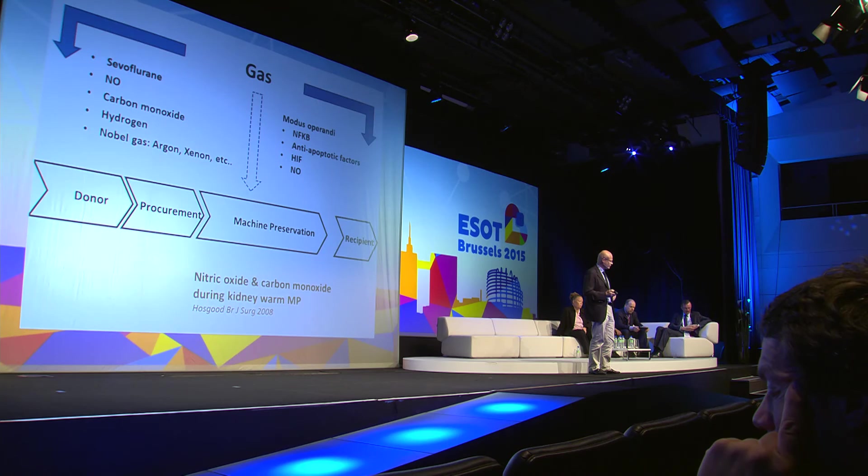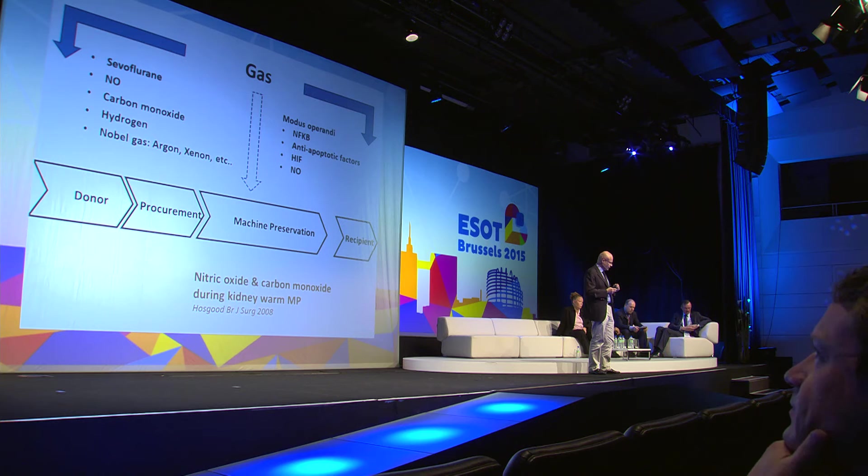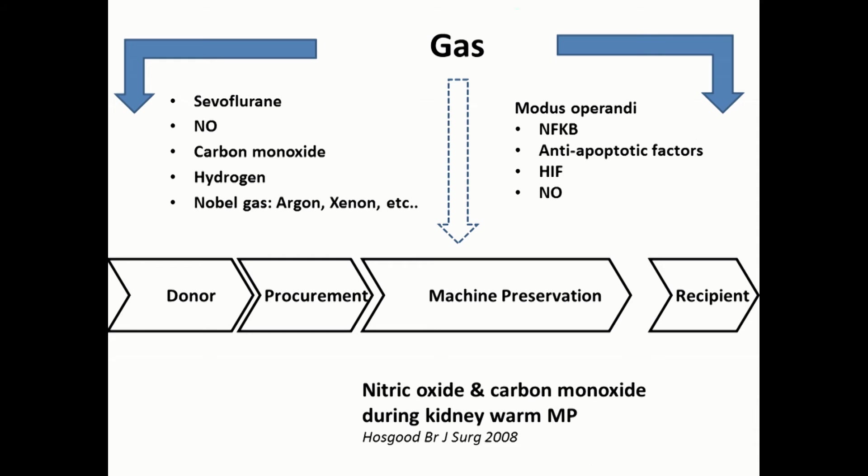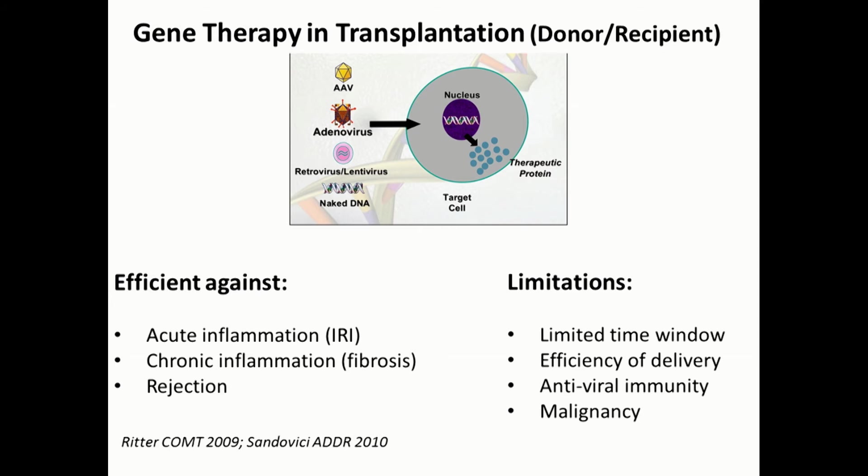Just one example: by pre-treating the organ ex vivo with low levels of anti-HLA to try to induce accommodation. Gas is another example — there are all sorts of gases with anti-apoptotic and anti-inflammatory effects, and with machine perfusion we have the possibility to directly target those gases into the organs. That this is a promising strategy has already been suggested by a publication from the group of Nicholson.